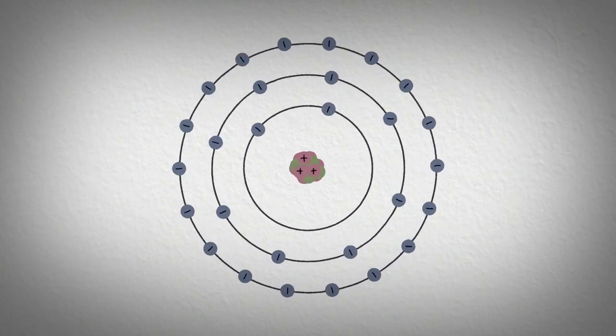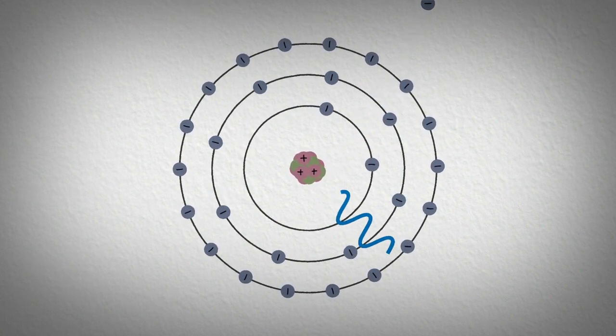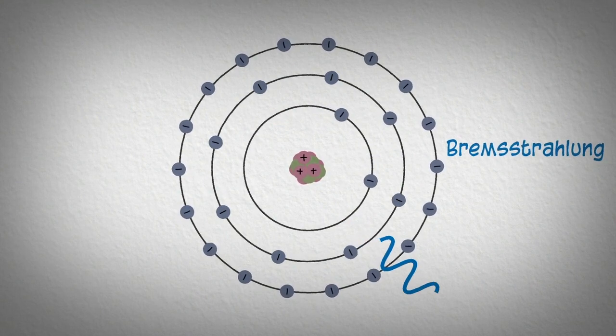When the electrons interact with the atoms in the anode, two different things can occur. The first possibility is that the electron will be redirected by the positive charge of the nucleus, producing a broad emission spectrum known as bremsstrahlung.